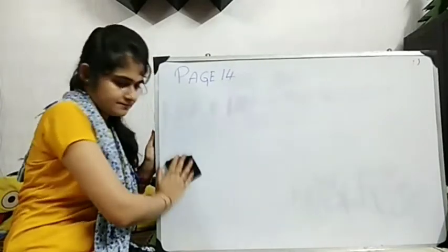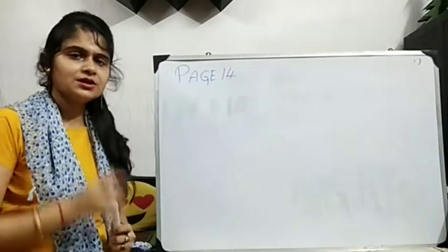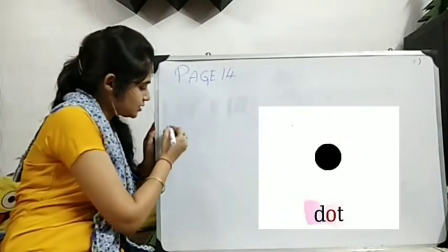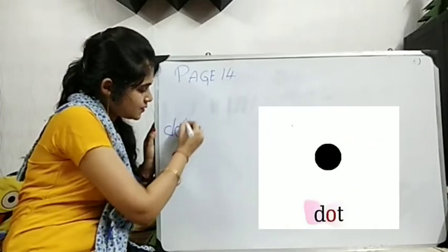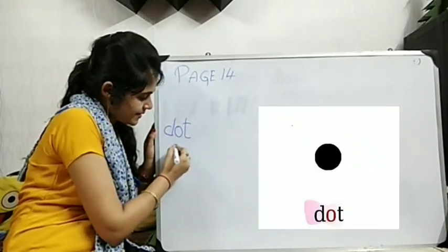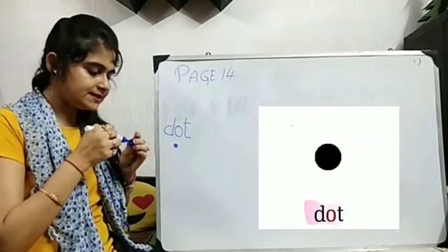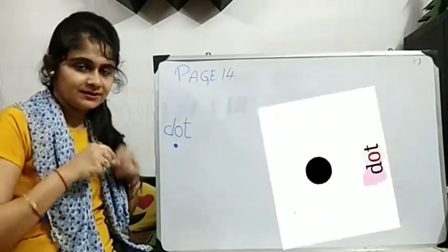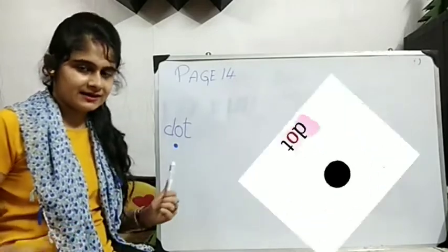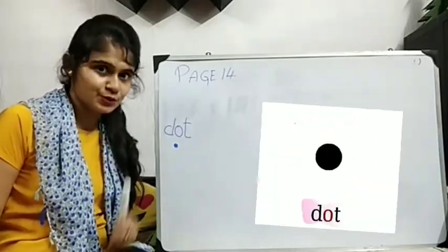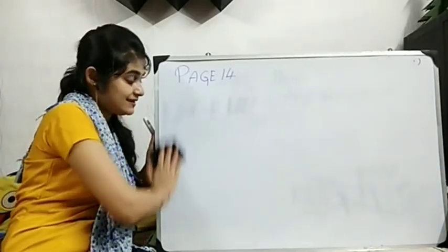Next one. What is the next picture? Dot. D-O-D. Dot. Mane here. I am dot dhelem. This is called dot. Okhane ki color e dot dekhte patchi? Black. Okhane ki color? Blue. So D-O-D. Dot.